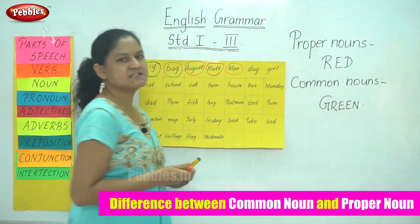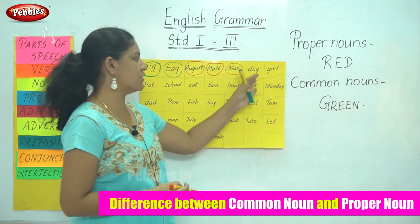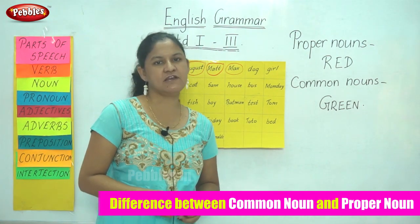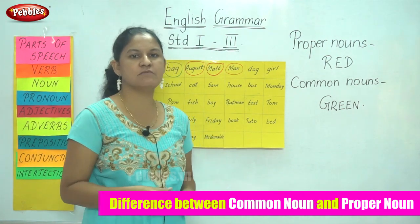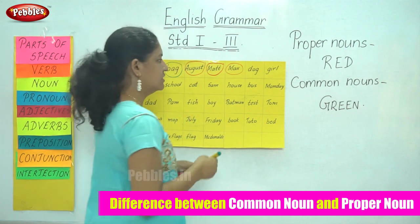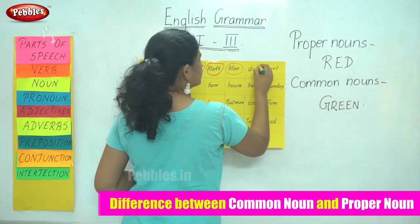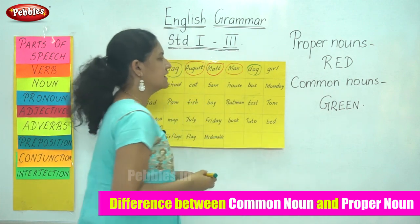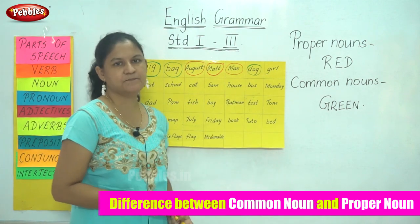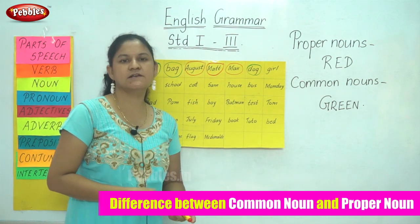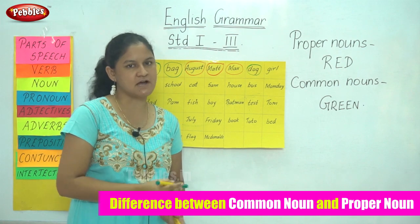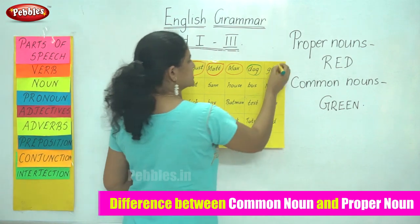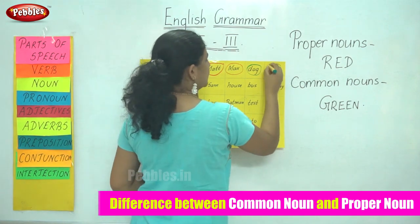The next word is dog. Dog is the name of an animal and is a common noun, so I circle the word dog in green. Next I have the word girl. Girl is a common noun and I use my green sketch to circle the word girl.